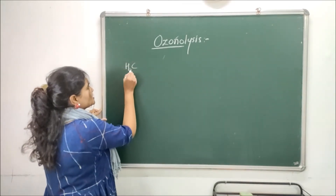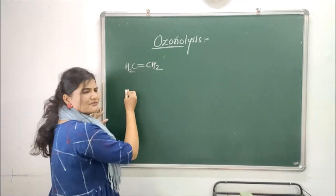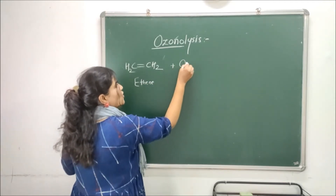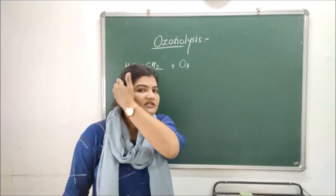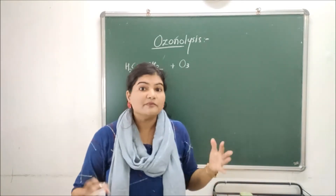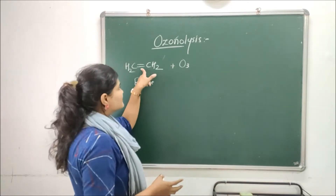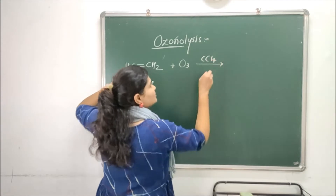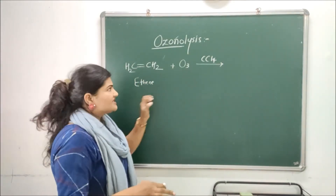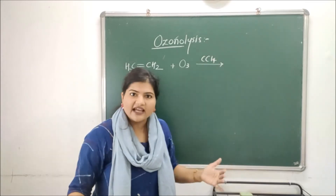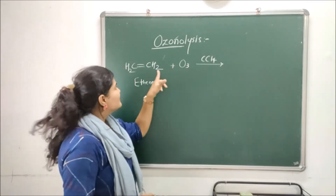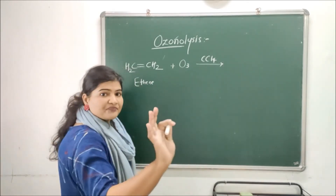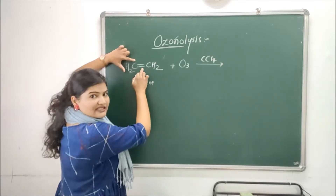Let's take an example: CH₂=CH₂, the basic alkene called ethene. I will add ozone to this alkene. The ozone — three oxygen atoms — will be added against the double bond. The conditions require a neutral or inert solvent like carbon tetrachloride, and in this inert atmosphere the ozone will be added against the double bond in the alkene.